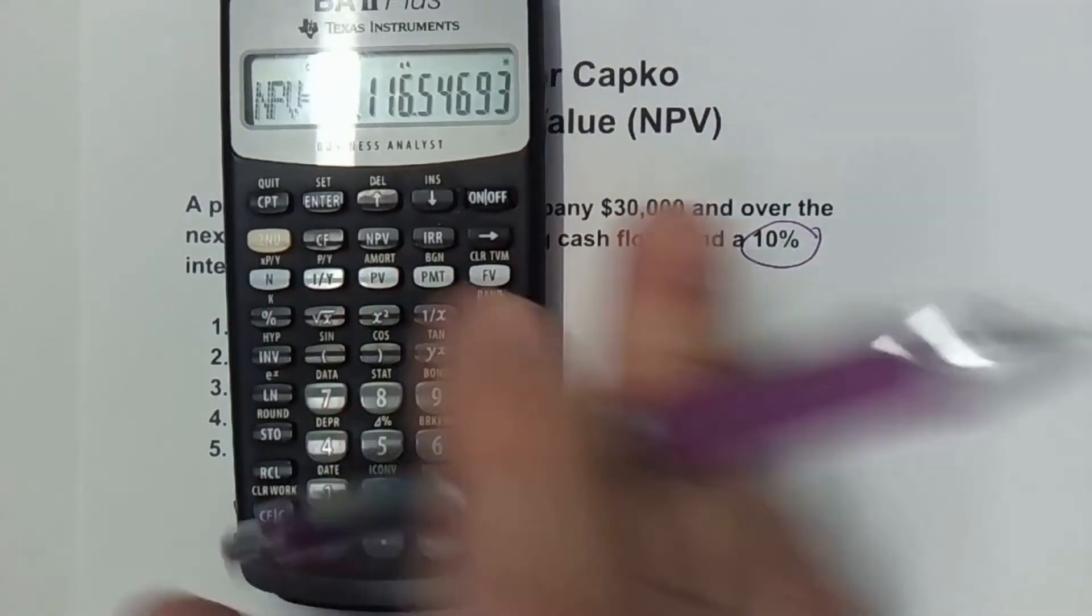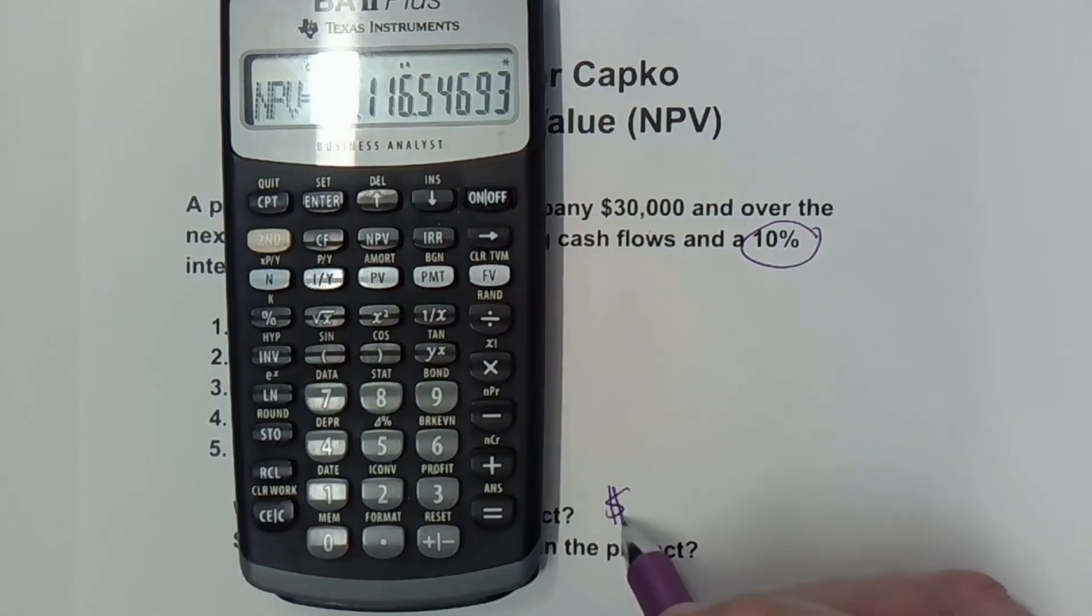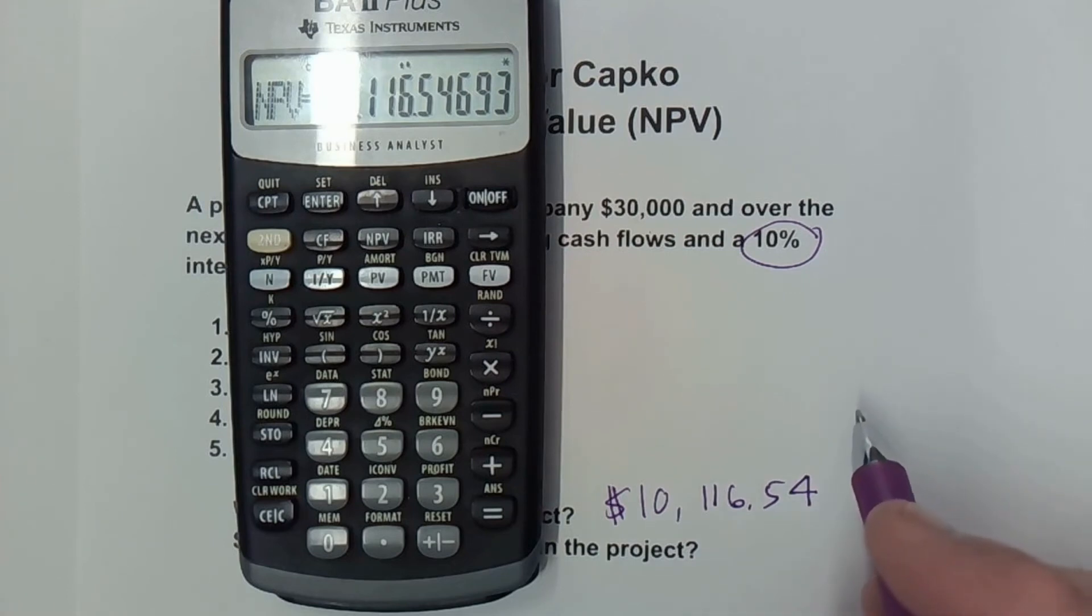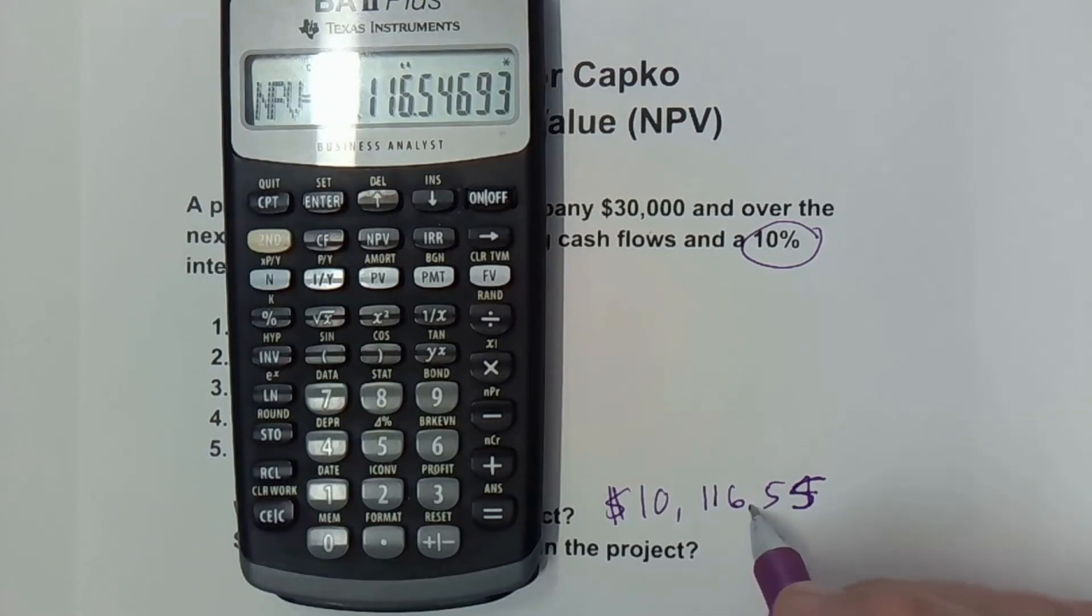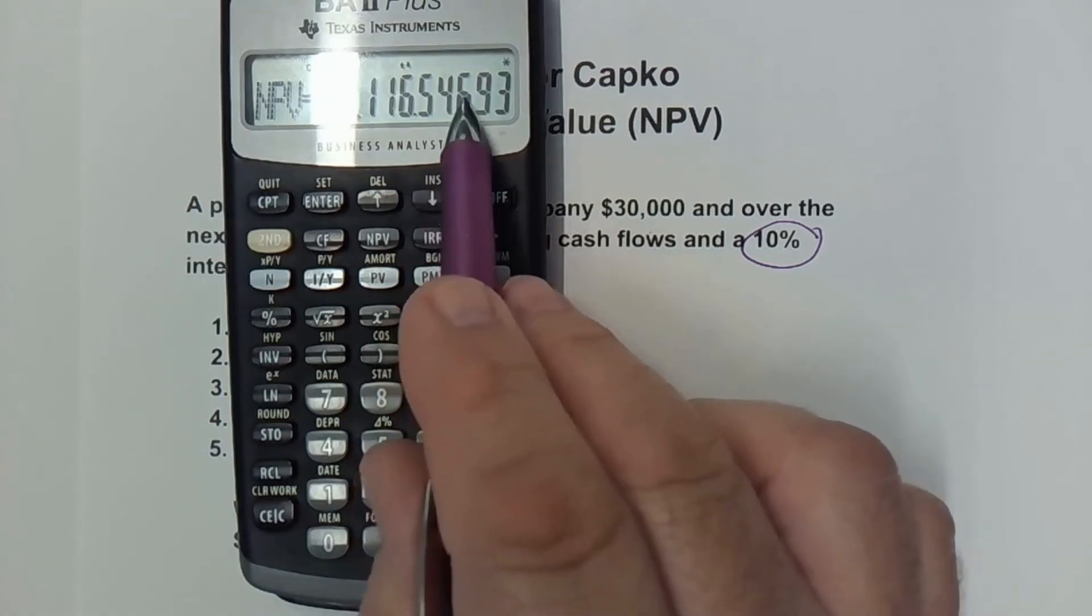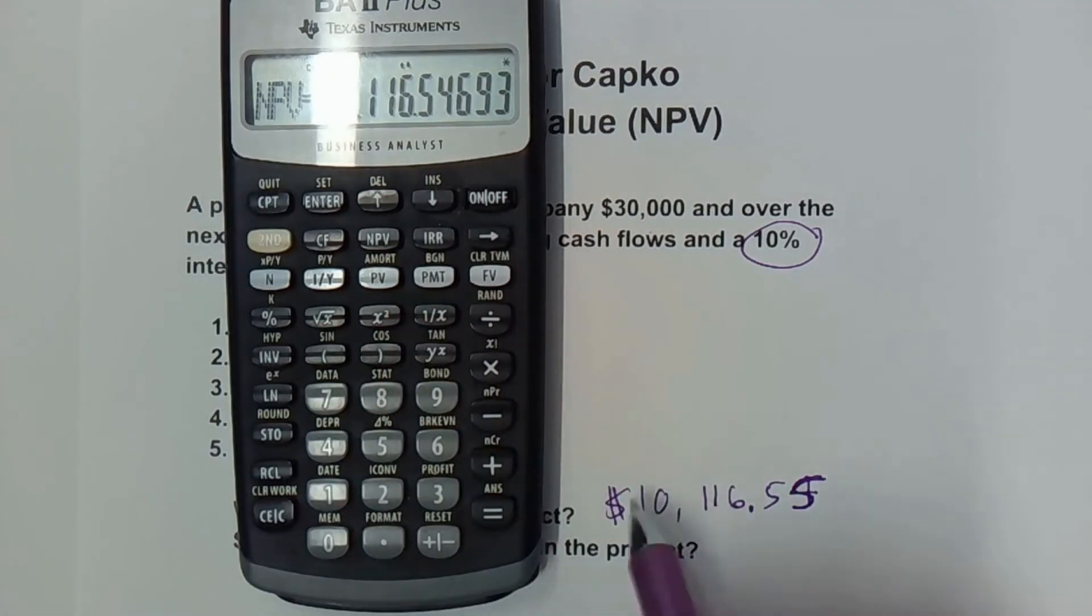And it gives us 10,116.54. We can round that up to actually $10,116.55 if I'm going to round it. So that's our net present value of this project.